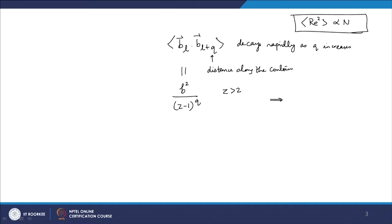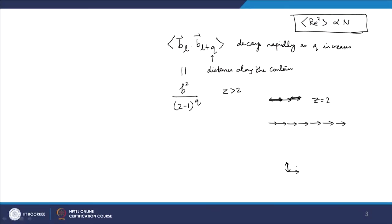Z equal to 2 is a special case because if we have a 1D random walk and disallow folding back, then you form a straight chain. For Z equal to 2, if I disallow folding back there is only one conformation of the chain, which goes against the idea that the chain can take many many conformations. That does not happen for Z equal to 3 or higher, because even in a 2D walk if I fold back I can explore in another direction and fold back again. So only for Z equal to 2 is there a problem; for Z equal to 4, 6 and so on we do not encounter this difficulty.